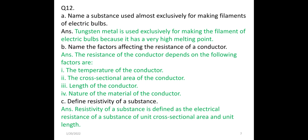Question 12: Name the substance used most exclusively for making filaments of electric bulbs. Tungsten metal is used exclusively for making the filament of an electric bulb because it has a very high melting point. If a metal does not have a high melting point, it will melt when the bulb heats up. Tungsten takes much longer to melt, which is why it is used.